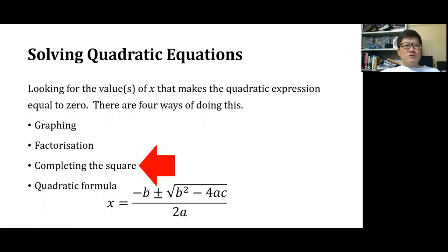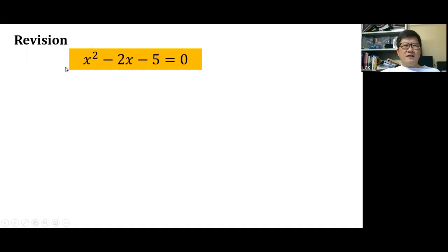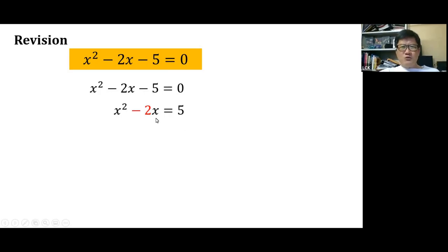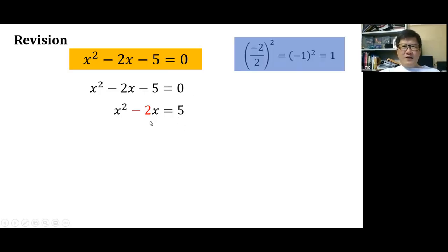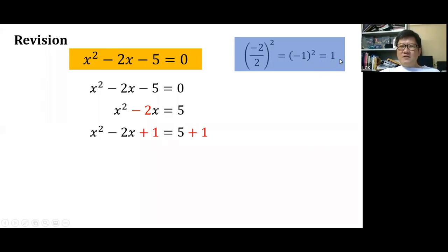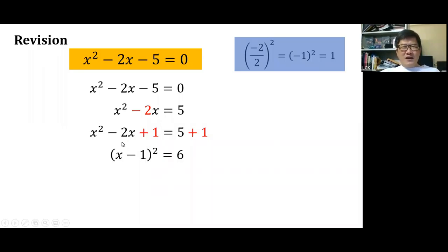Last week we looked at solving quadratic equations using completing the square. If asked to solve a quadratic equation this way, we rearrange, transfer the constant to the other side to get 5, then halve the coefficient of x to get minus 1, square it to get 1, and add 1 to both sides. This gives us a perfect square trinomial on the left side.